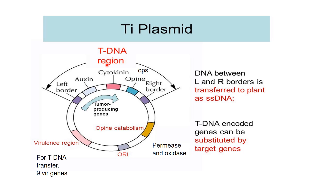The most important part of the Ti plasmid is the T-DNA region, responsible for the tumour or crown gall disease. It has two borders: a left border and a right border. This region is transferred to the plants in single-stranded form — the vir gene proteins produce the single-stranded DNA which is transferred to the plant cells. The T-DNA region contains genes for opine synthesis, which depends on whether the plasmid is of the octopine or nopaline type.